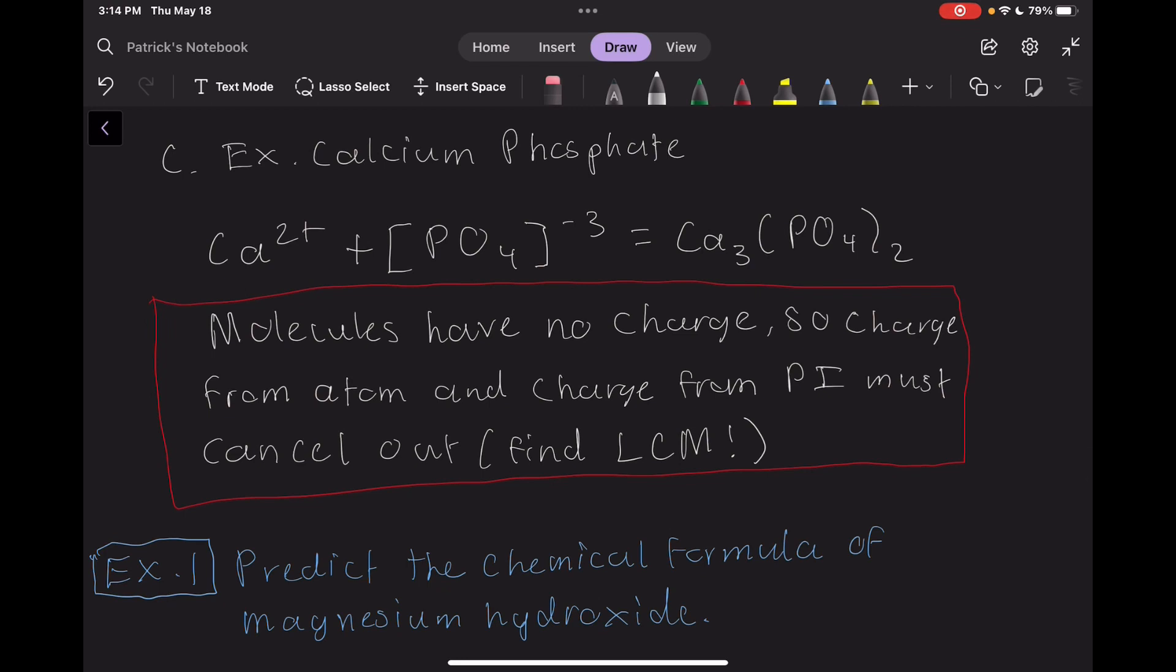One common test question is to ask the student to name a PI given its formula, or alternatively, ask them to give the formula for a PI after providing the name. The rule of thumb to remember here is that for a bond between a PI and another substance to form, the charges must cancel out.